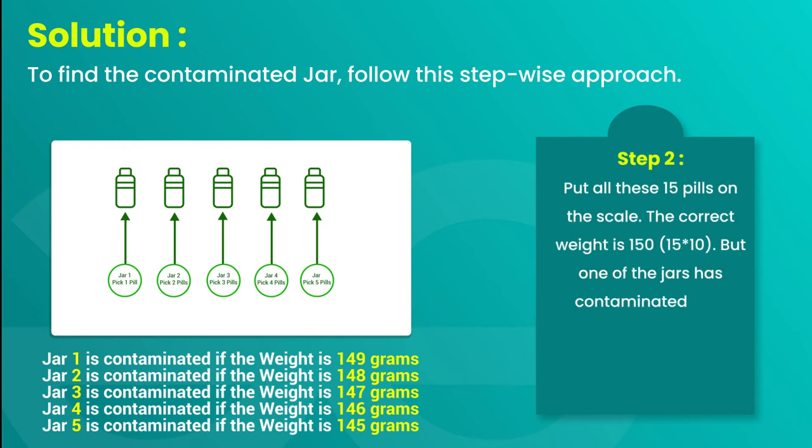Step 2: Put all these 15 pills on the scale. The correct weight is 150 (10 times 15). But one of the jars has contaminated pills, so the weight will definitely be less than 150.